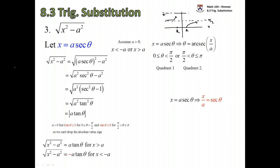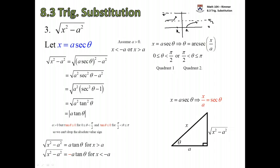For the reference triangle: from x = a·sec(θ), dividing by a gives x/a = sec(θ). Since secant is the reciprocal of cosine, and cosine is adjacent over hypotenuse, secant is hypotenuse over adjacent. Draw a triangle with hypotenuse x and adjacent side a. The third missing side is the square root of x squared minus a squared — the root that brought you here. This reference triangle helps you transform from theta back into x.